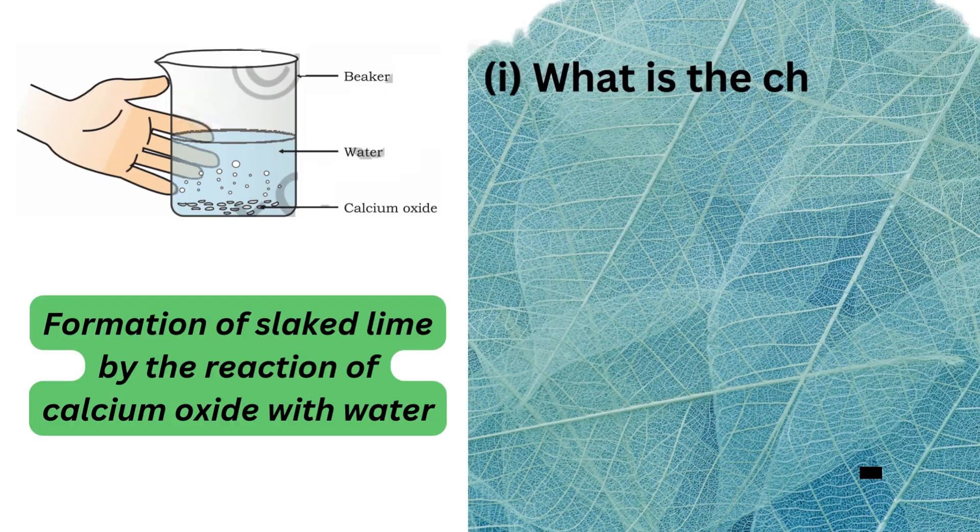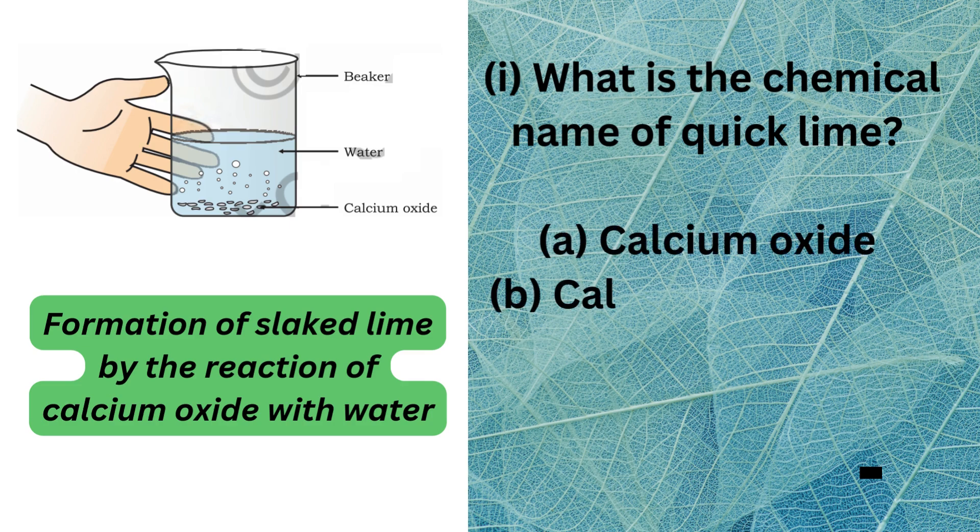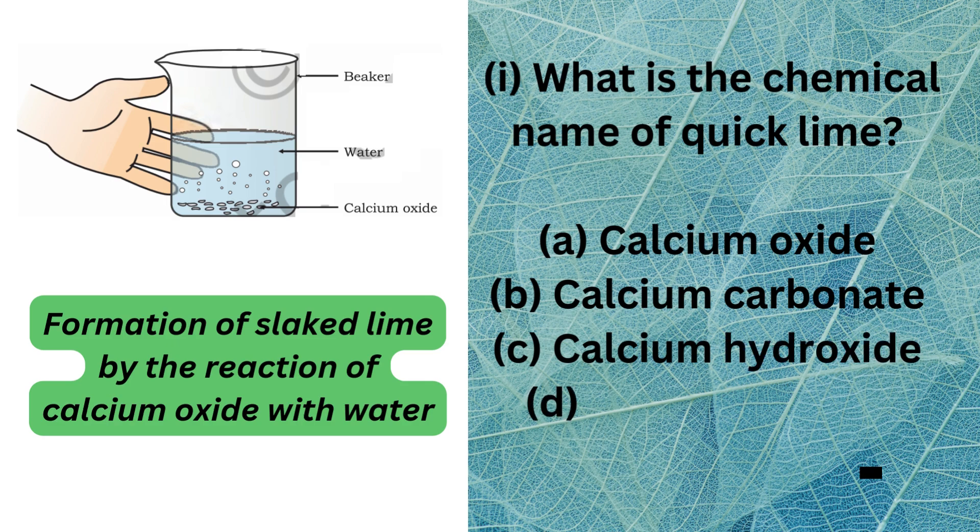Question 1: What is the chemical name of quicklime? A. Calcium Oxide, B. Calcium Carbonate, C. Calcium Hydroxide, D. Carbon Dioxide.